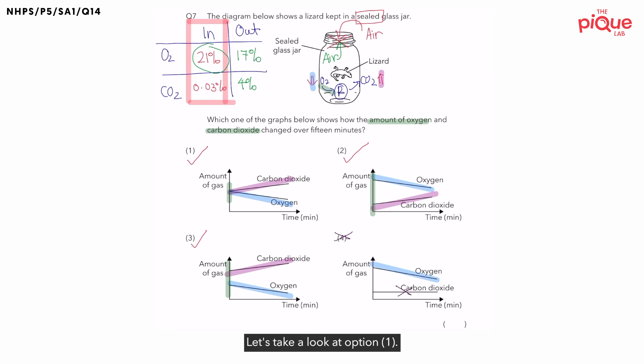Let's take a look at option 1. Does oxygen have a higher starting point? No. So, 1 is out. Option 2. Does oxygen have a higher starting point? Yes. Okay, therefore, answer should be option 2. But let's also analyze option 3 to make sure that option 3 is wrong. So in option 3, does oxygen have a higher starting point? No. Instead, oxygen has a lower starting point. This is why option 3 is wrong. Therefore, our answer should be option 2.